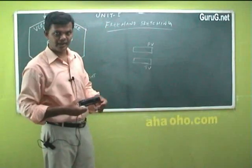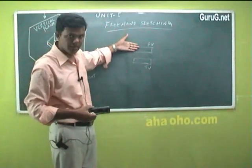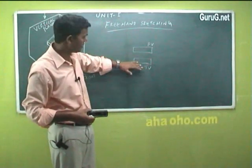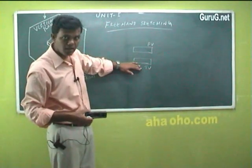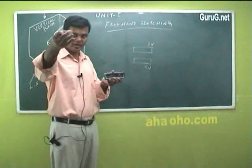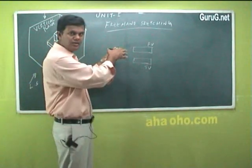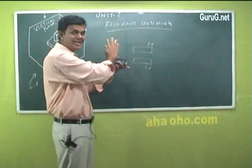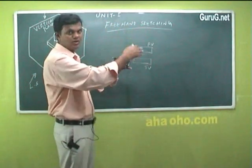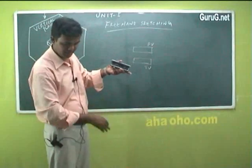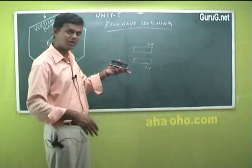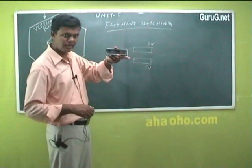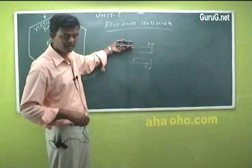Why am I writing the front view here and drawing it here? Because the front view — whatever you view — you are drawing it in this vertical plane. This is called a vertical plane; this wall is called the vertical plane. And your ground, your floor, is called the horizontal plane. So whatever you see in the front view, you are drawing it in the vertical plane.